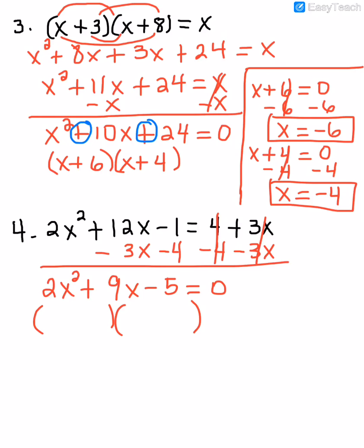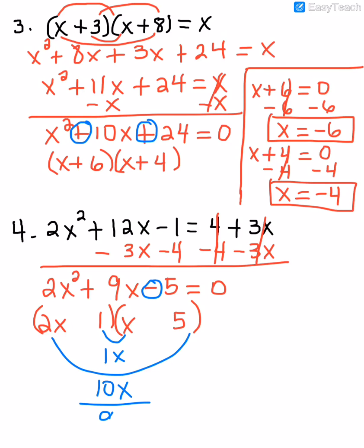The only factors of 2 are 2 and 1, so I have 2x and x. The only factors of 5 are 5 and 1, so I put 1 here and 5 there. The second sign tells me the signs are different. Using the smiley face check: that gives me 1x and 10x. If I subtract those, I get 9x. I need the 9 to be positive, so the 10 needs to be positive and the 1 needs to be negative. So the negative goes in the spot that makes the 1 negative, and the plus goes where the 10 is positive. That gives me the correct factors.